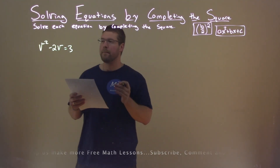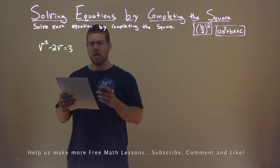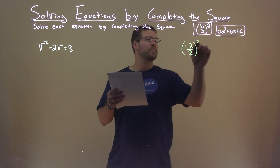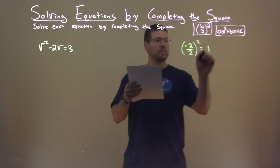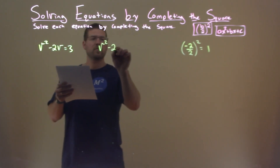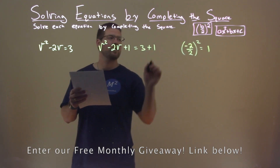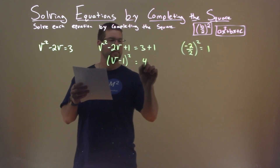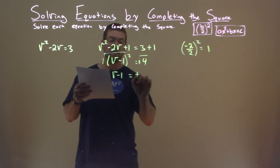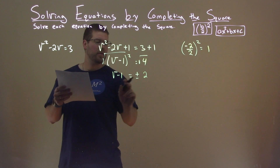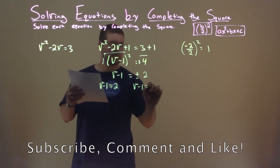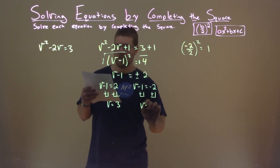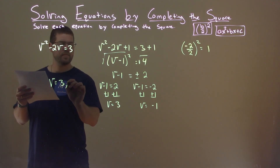We're given this problem right here: v squared minus 2v equals 3. We want to solve this by completing the square. The first thing I'll notice is it's already in the form I'm looking for. So I'm going to take my B value, which is negative 2, divide by 2, and square that — negative 2 divided by 2, squared, is positive 1. Adding 1 to both sides: v squared minus 2v plus 1 equals 3 plus 1. The left-hand side is a perfect square — v minus 1, all squared — and 3 plus 1 is 4. Taking the square root of both sides: v minus 1 equals plus or minus 2. Two equations: v minus 1 equals positive 2 gives v equals positive 3, and v minus 1 equals negative 2 gives v equals negative 1. Our two solutions are v equals 3 and negative 1.